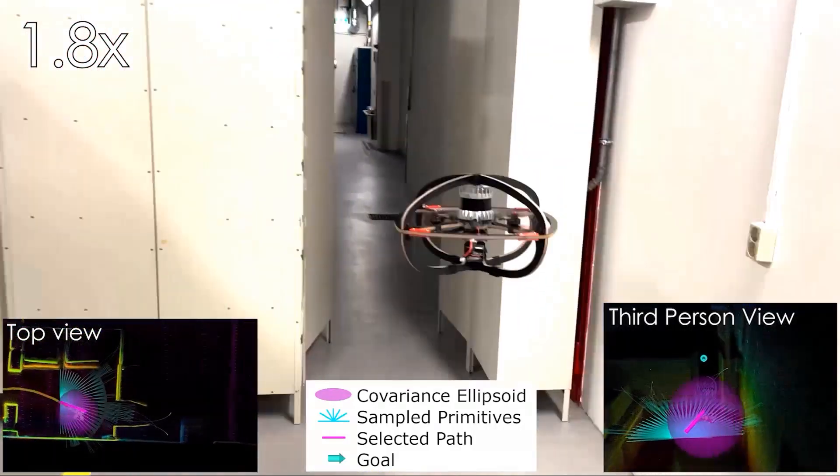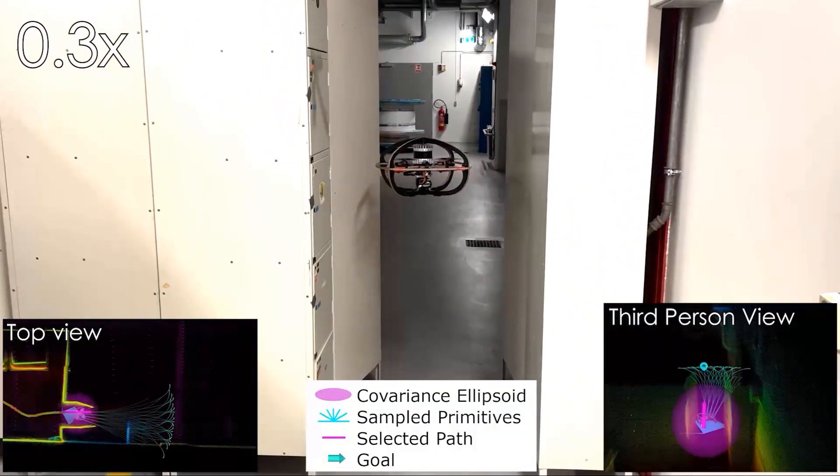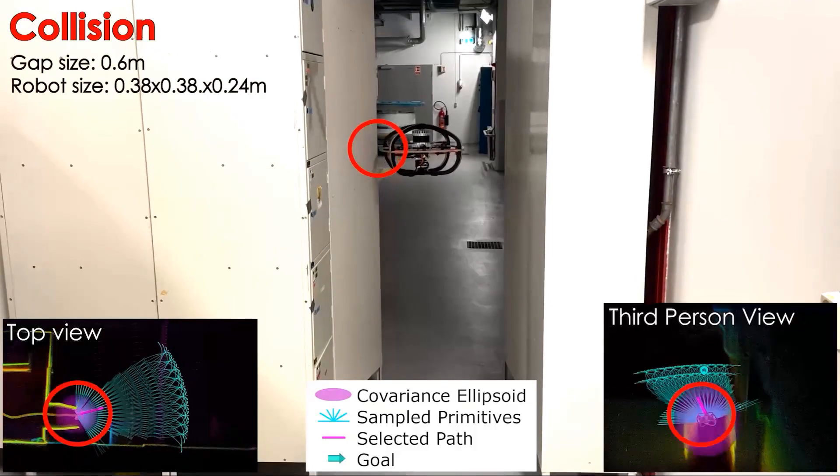In this case, all the generated paths result in collision when considering uncertainty, and the robot must accept a possibly colliding path to be able to reach the goal location.